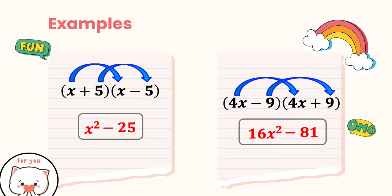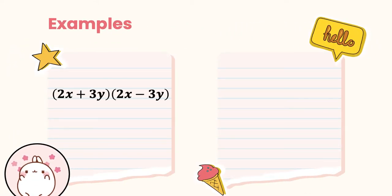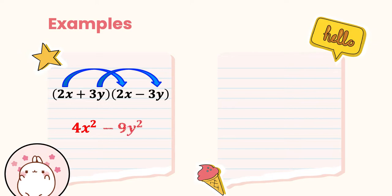In short, the first binomial will be addition or subtraction and the second binomial will be the opposite operation. Next example: multiply (2x + 3y)(2x − 3y). The first expression is addition, the second is subtraction, and the terms are the same. Multiplying the first terms: 2x times 2x gives 4x². Multiplying the second terms: 3y times 3y gives 9y². The final answer is 4x² − 9y². There are no like terms, so we cannot simplify further.